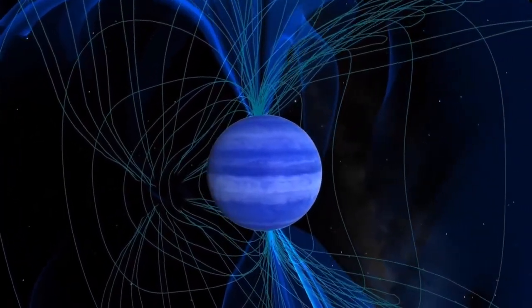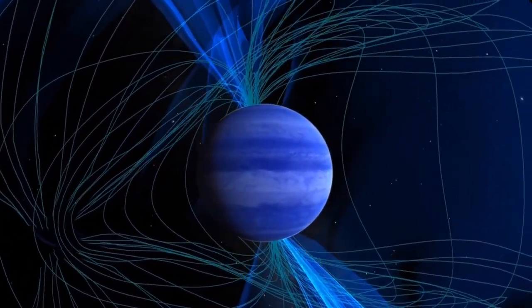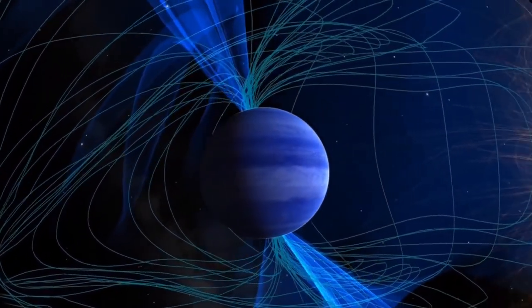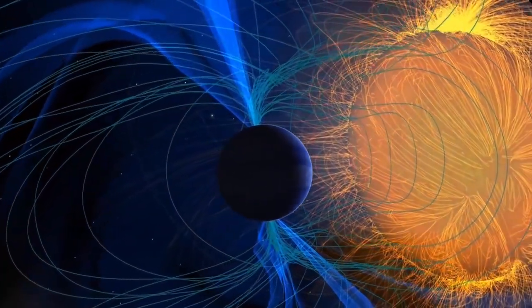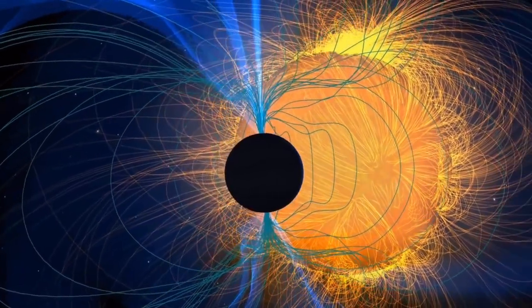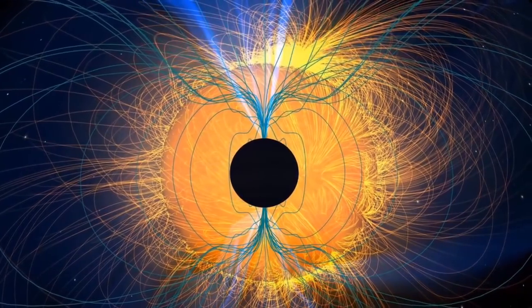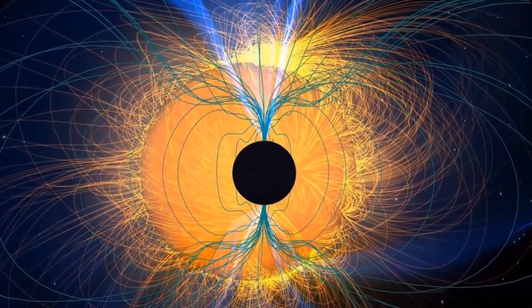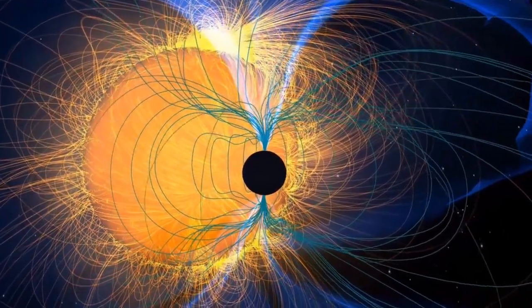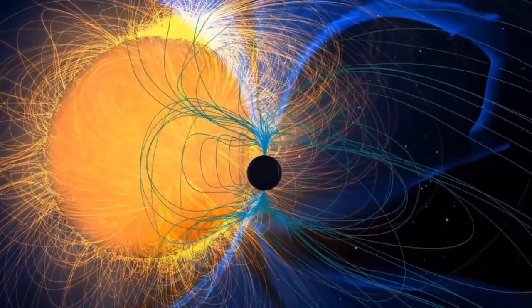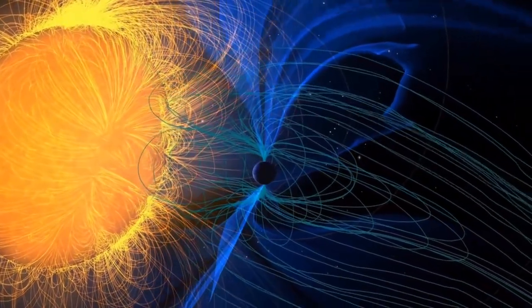The nearby giant planet HD 189733 b eclipses its star once every two Earth days. When this happens, we see a dip in the star's light caused by the bow shock of its magnetic field, and another dip caused by the planet. This is our first discovery of a magnetosphere around an extrasolar planet.